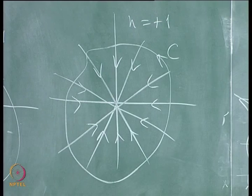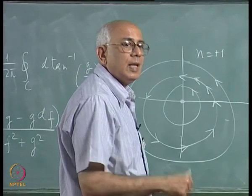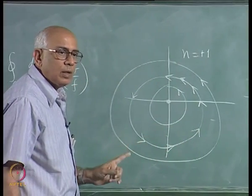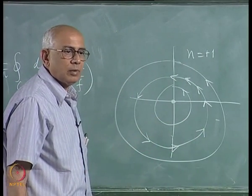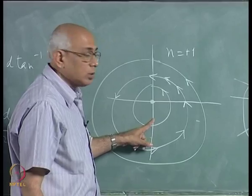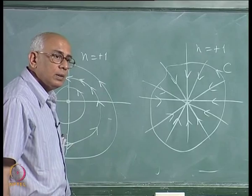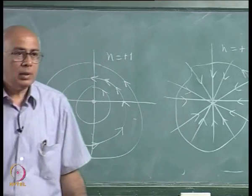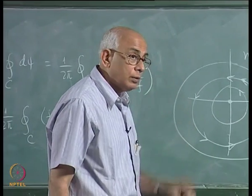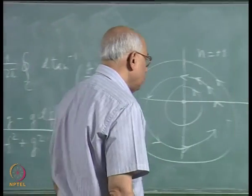So we see that at a node, the winding number is +1 regardless of whether the node is stable or unstable. The idea of the winding number does not say much about the stability of the critical point, but says something about the local geometry of the vector field. For a spiral point, a node, and a center — regardless of their stability — the winding number is always +1.